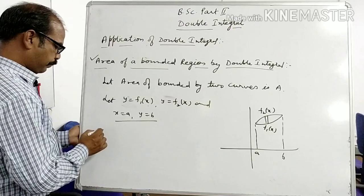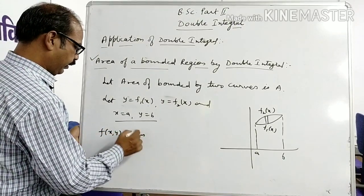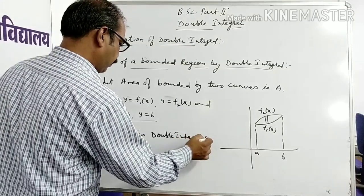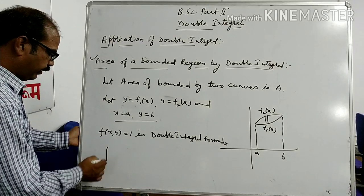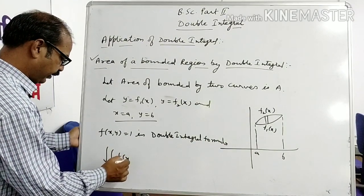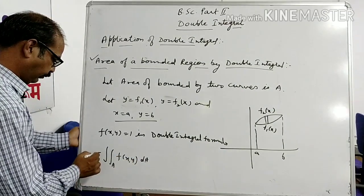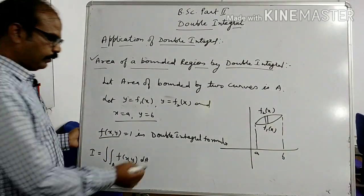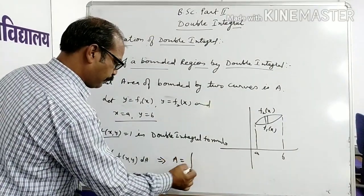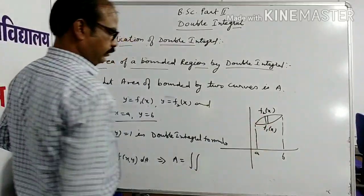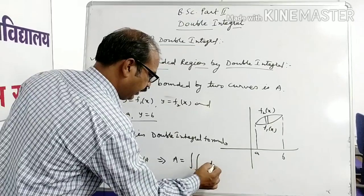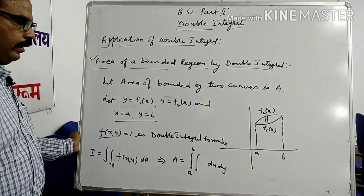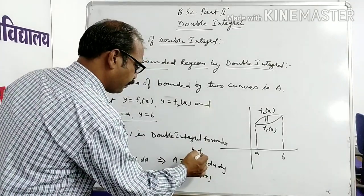To find the area, we substitute f(x, y) equal to 1 in the double integral formula. The double integral formula is the double integral of f(x, y) dA. If we substitute f(x, y) equal to 1, then we get the area bounded by the given region: A = ∫∫ dy dx, with the limit of x from A to B and limit of y from f₁(x) to f₂(x).